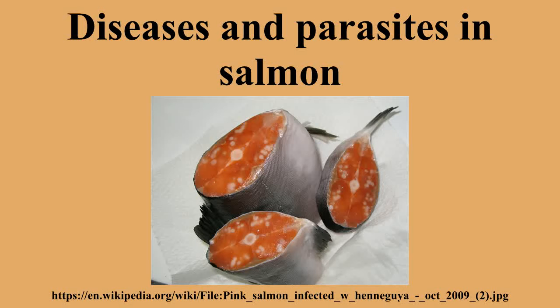Sea lice, particularly Lepeophtheirus salmonis and various Caligus species including C. clemensi and C. rogercresseyi, can cause deadly infestations of both farm-grown and wild salmon. Sea lice are ectoparasites which feed on mucus, blood, and skin, and migrate and latch onto the skin of wild salmon during free-swimming planktonic nauplius and copepodid larval stages, which can persist for several days.